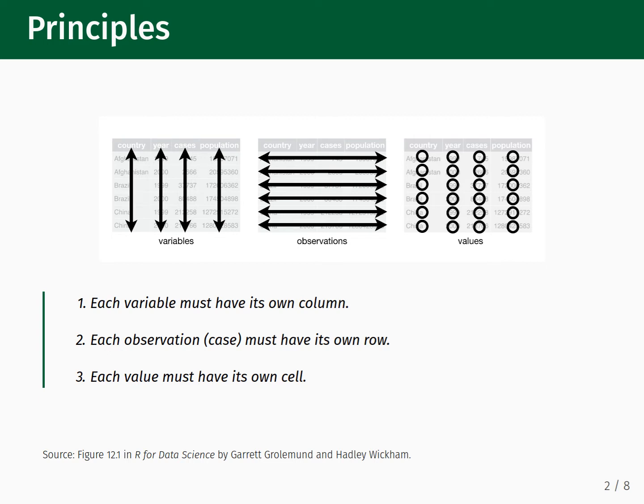There are three principles that need to be followed in order for a dataset to be considered tidy. Those principles are: 1. Each variable must have its own column, which is represented by the leftmost figure; 2. Each observation must have its own row, which is represented by the middle figure; and 3. Each value must have its own cell, which is represented by the rightmost figure.